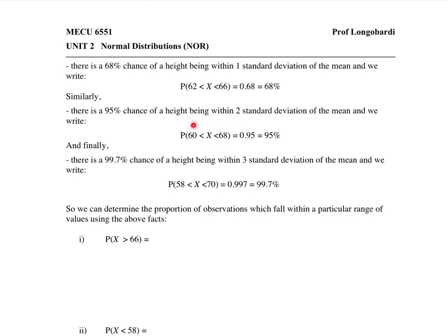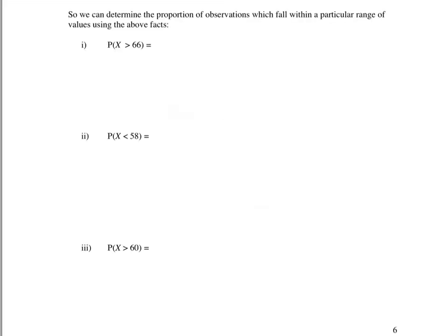Similarly, between 60 and 68 there are 95% of the observations, or we say a 95% chance of seeing a height within 60 and 68 inches. And if we were to look within three standard deviations between 58 and 70, there will be 99.7% of the observations. So using what we know about this distribution, X is normal with a mean of 64 and a standard deviation of 2.